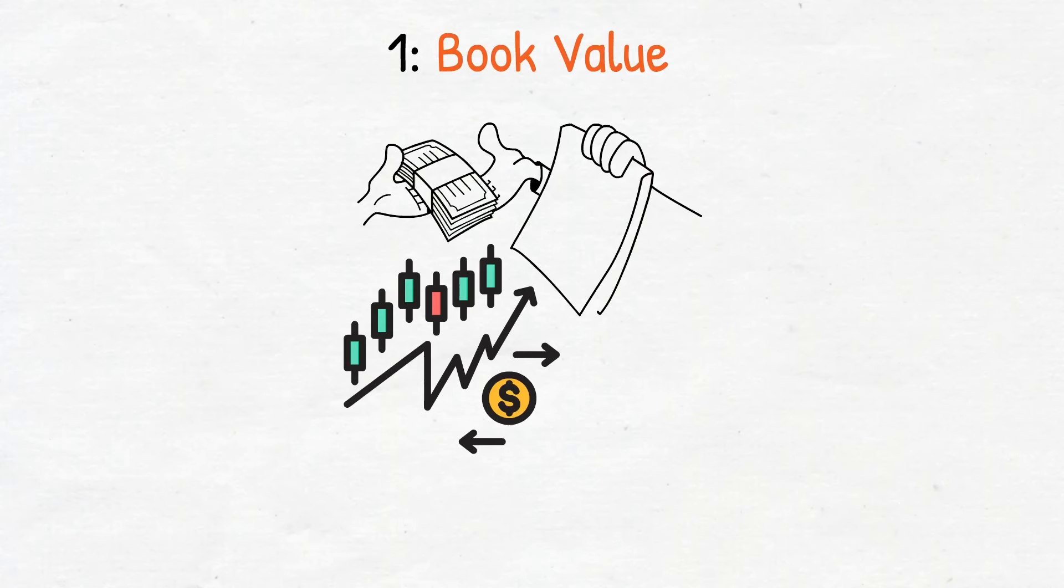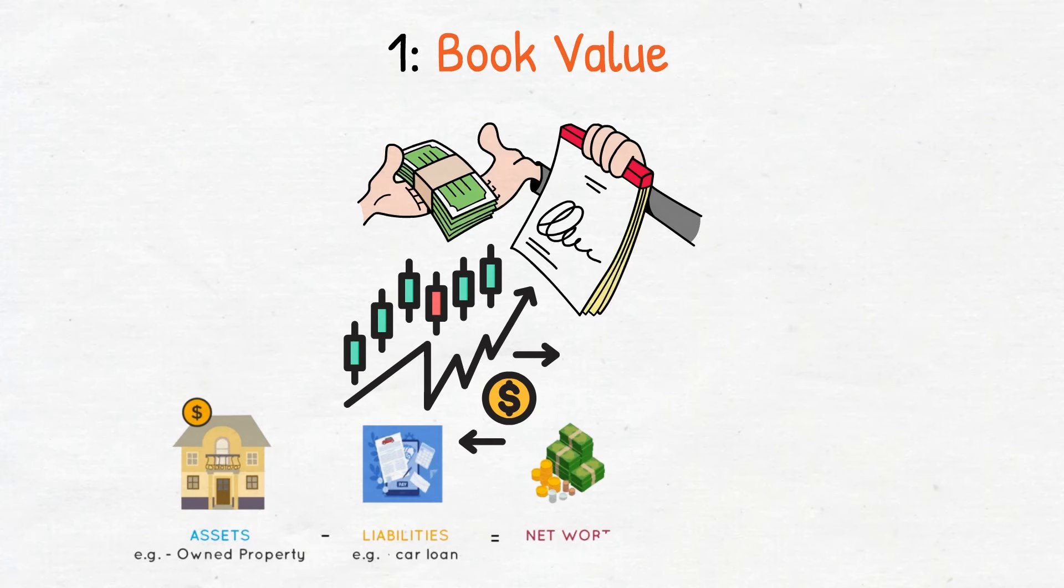An alternative to evaluating stocks on a per share basis is evaluating stocks based on their book value. Book value is generally defined as a company's net worth, which is its assets minus its liabilities. Interested investors can obtain this information from the company's annual report.